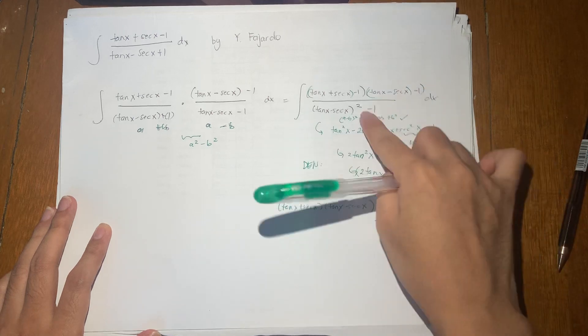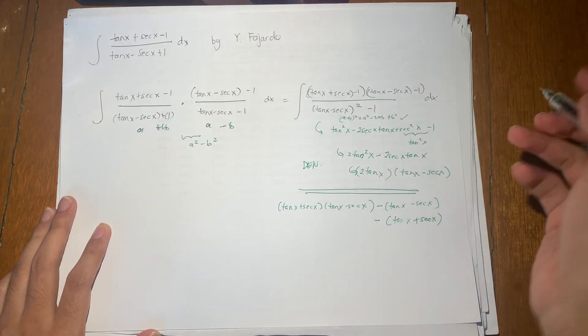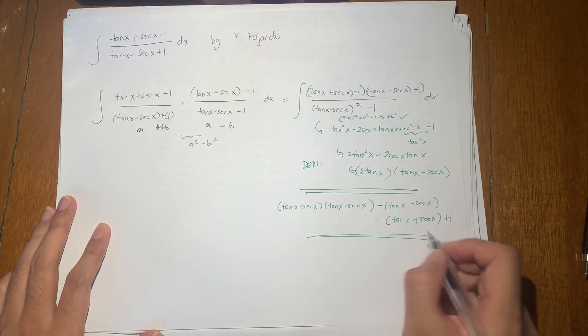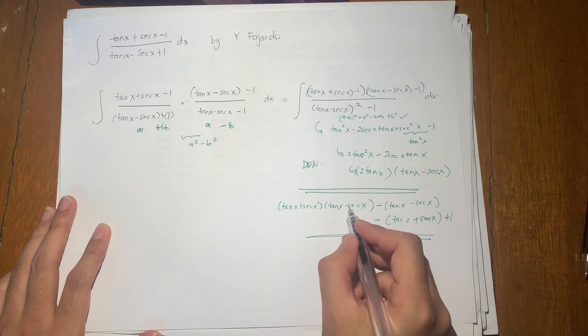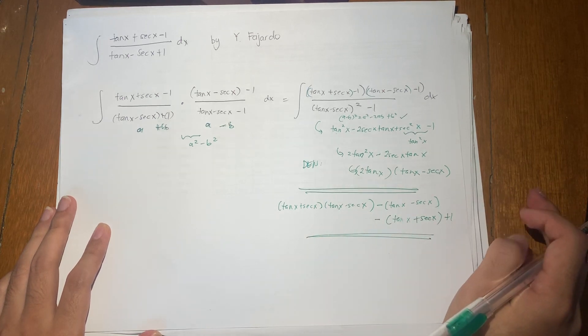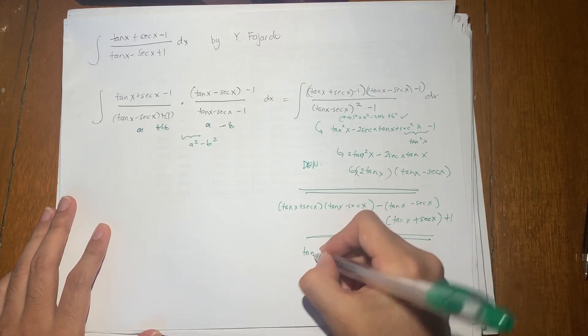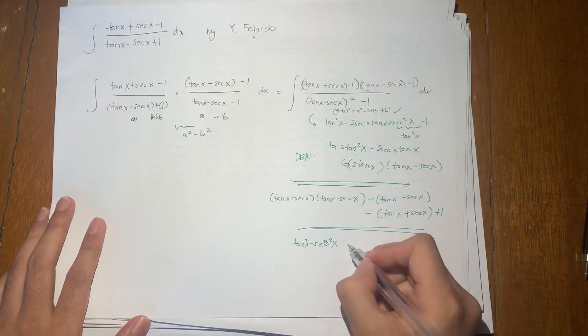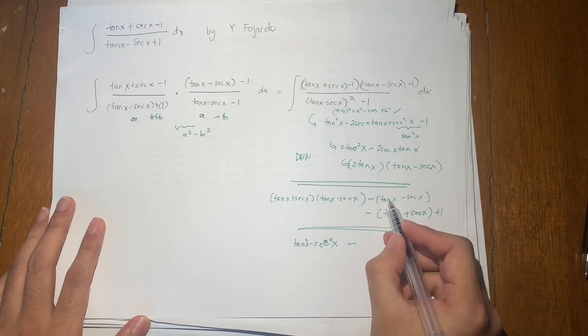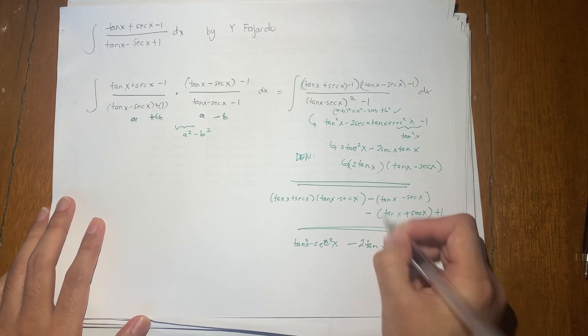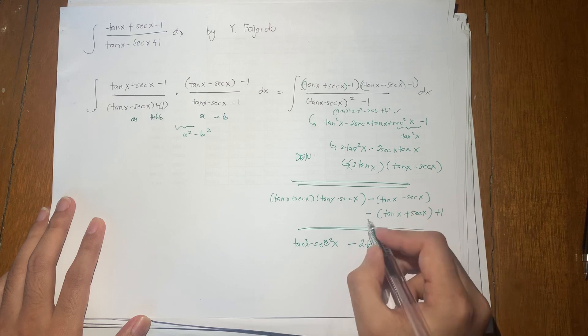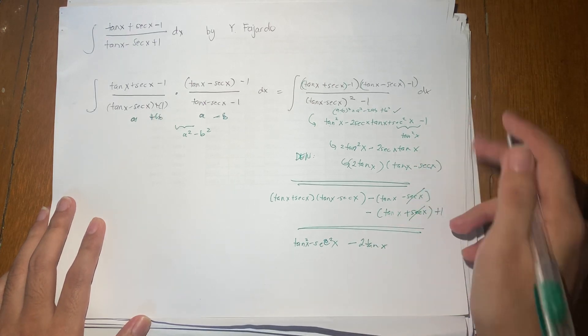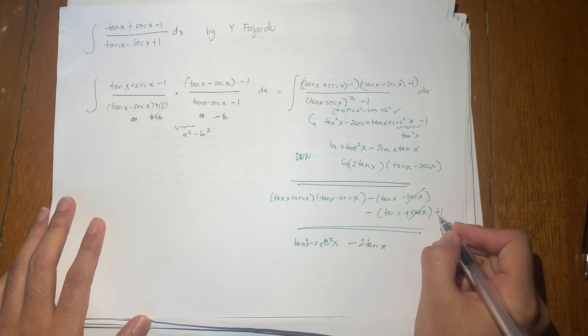And then the last terms are negative 1 times negative 1, so that's positive 1. So the entire thing here becomes tan x plus secant x times tan x minus secant x. That's just tan squared x minus secant squared x. And then this one becomes negative tan x minus tan x, that's negative 2 tan x. And then negative of negative secant x minus secant x, that cancels out. So you're left with 0 there. And then you have the plus 1 at the end.